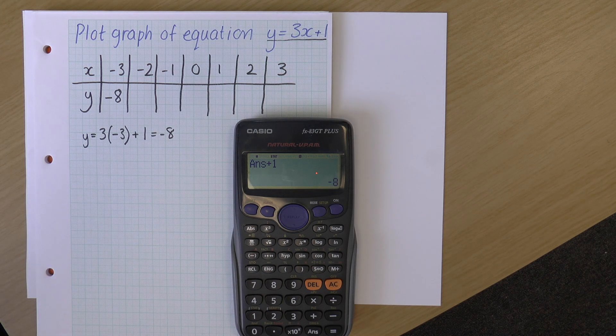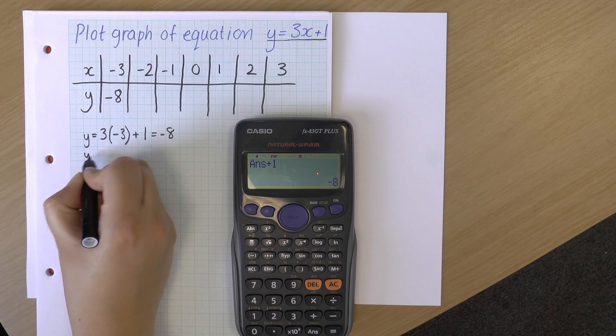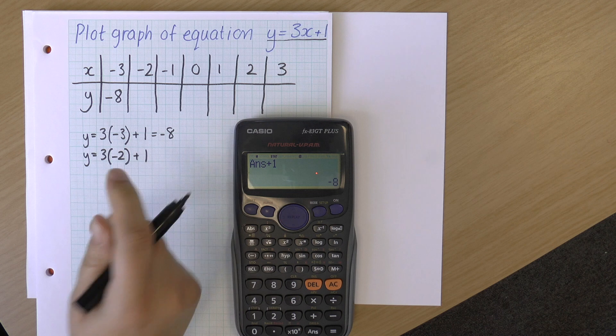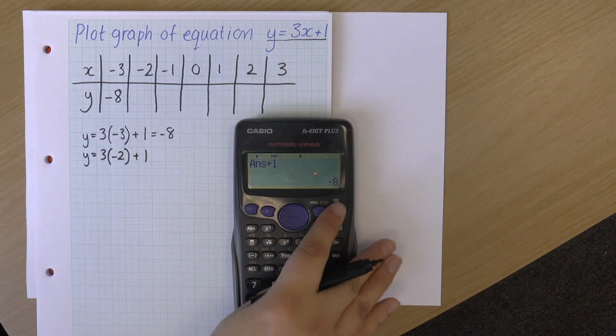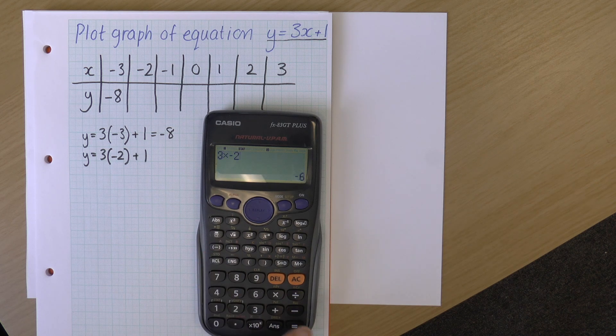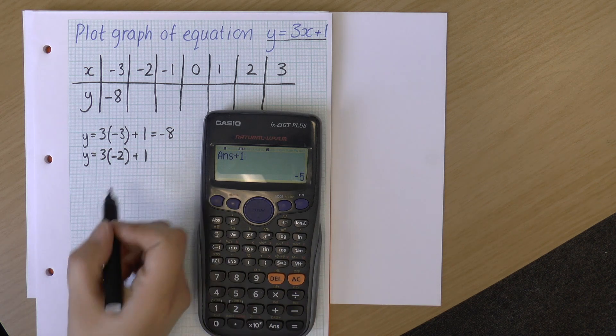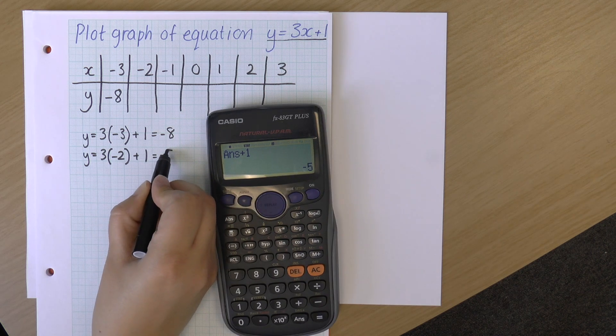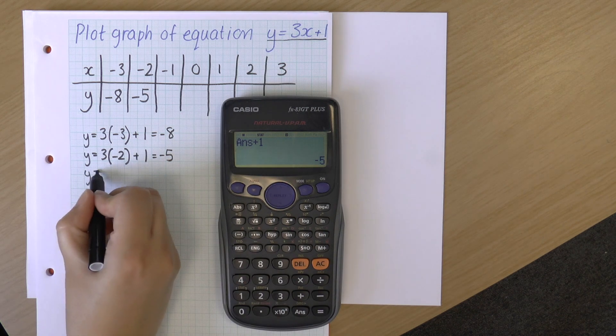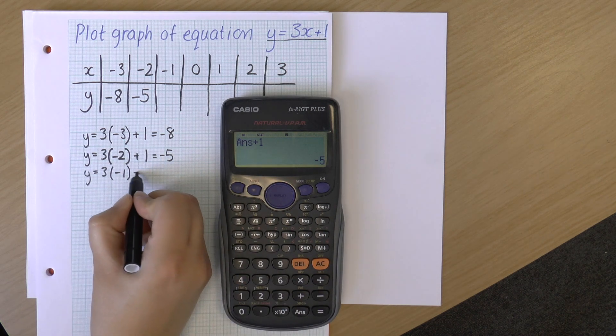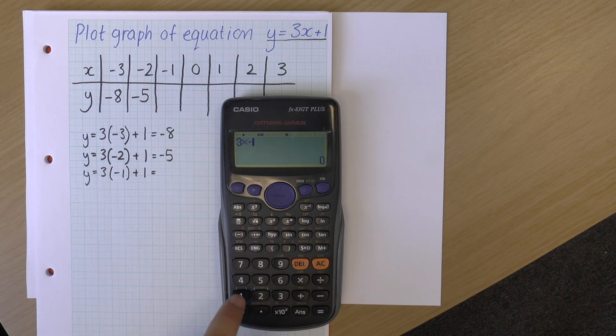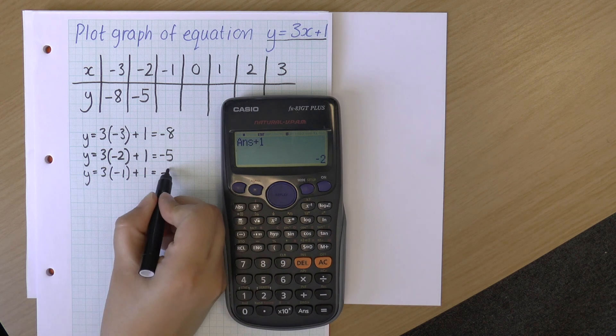And then I just do the others in turn. So y equals 3 times minus 2 plus 1. Remember, I'm always replacing this x here. So 3 times minus 2 plus 1 is minus 5. My next one: 3 times minus 1 plus 1. 3 times minus 1 plus 1 is minus 2.